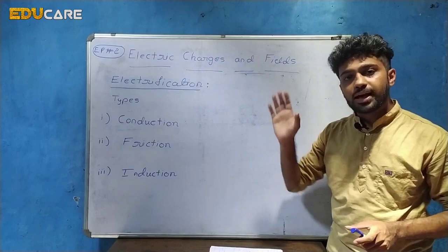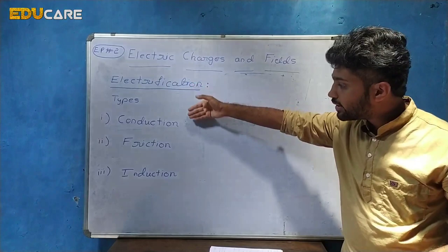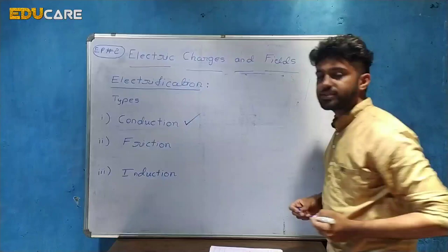Now, the types of electrification — there are three types: conduction, friction, and induction. Let us begin with conduction.